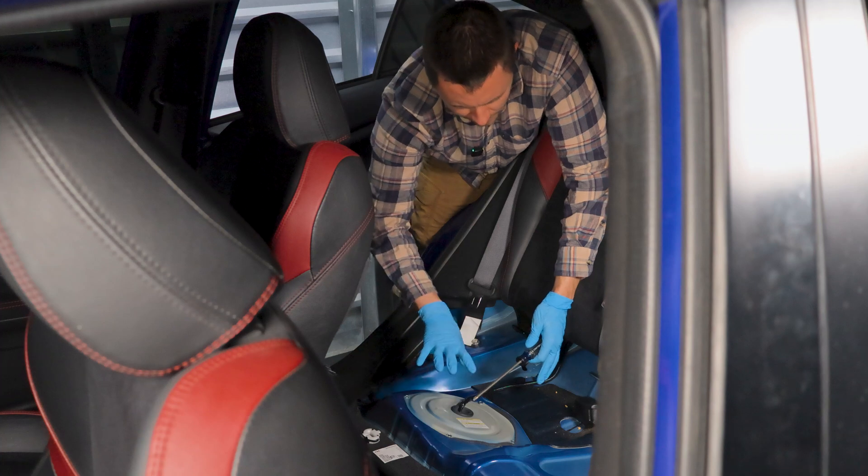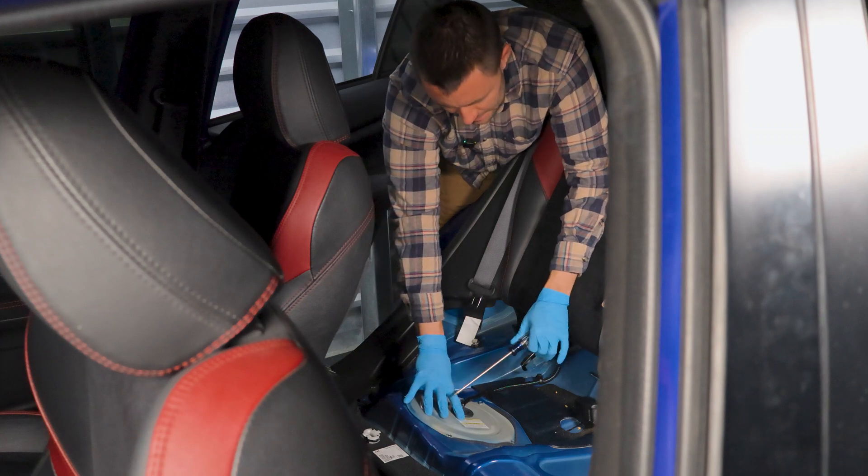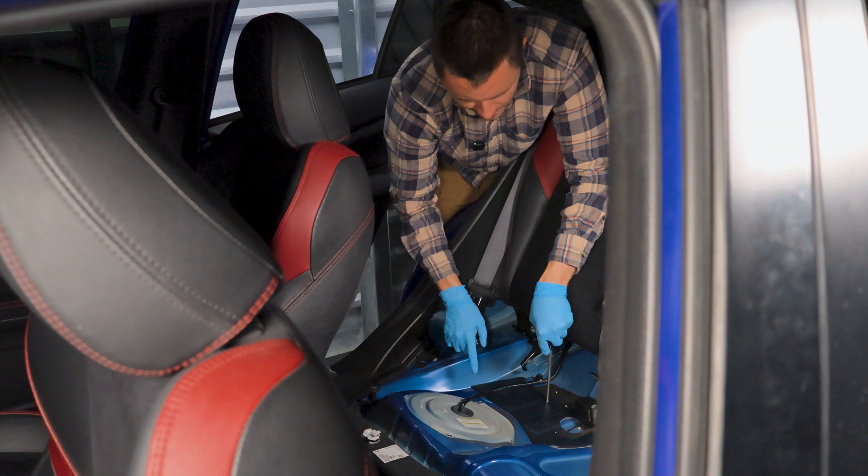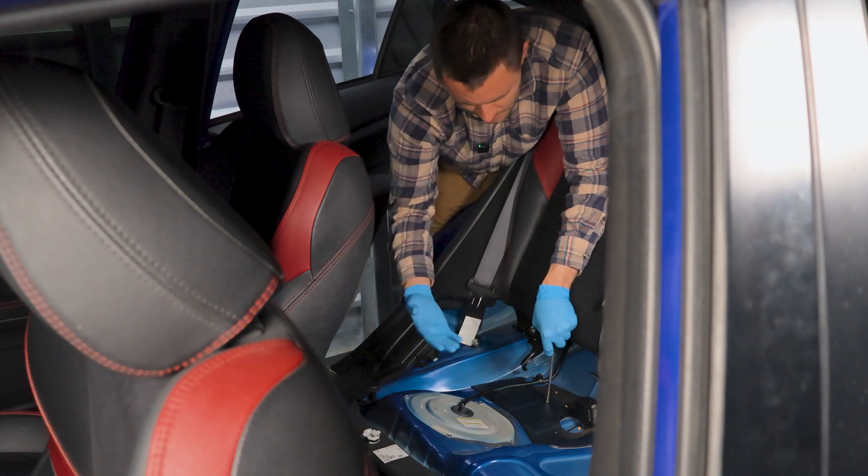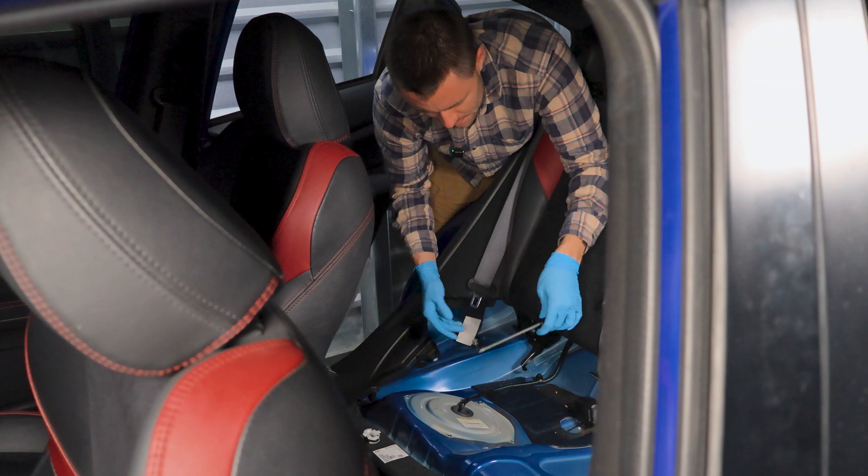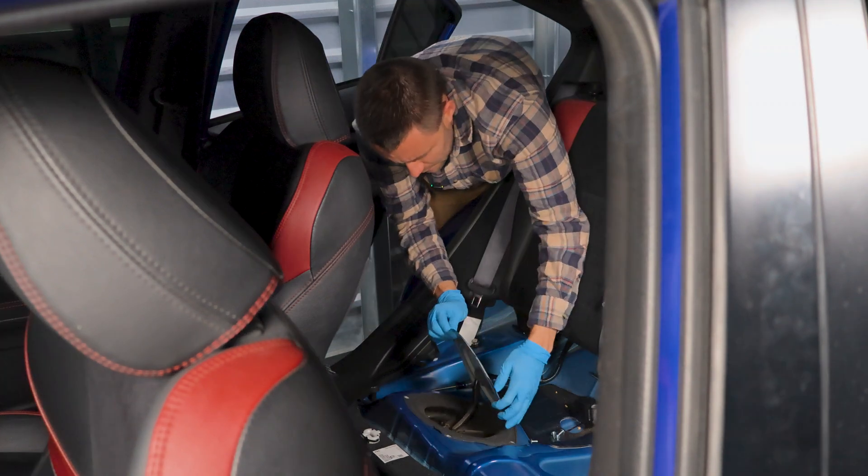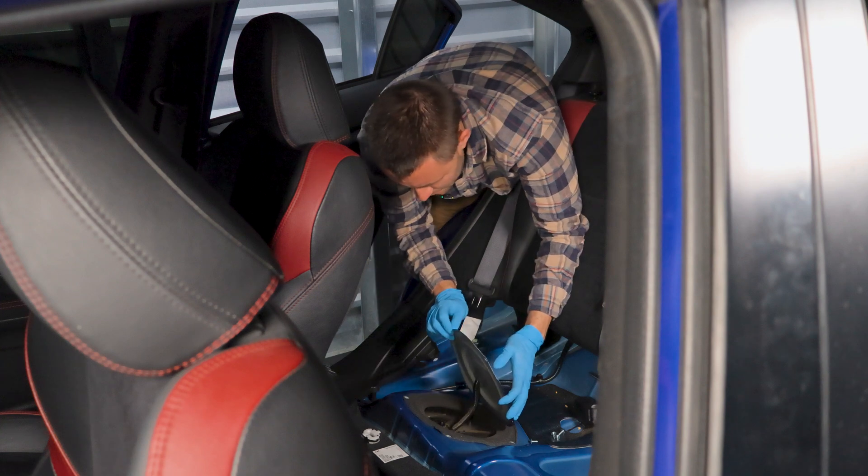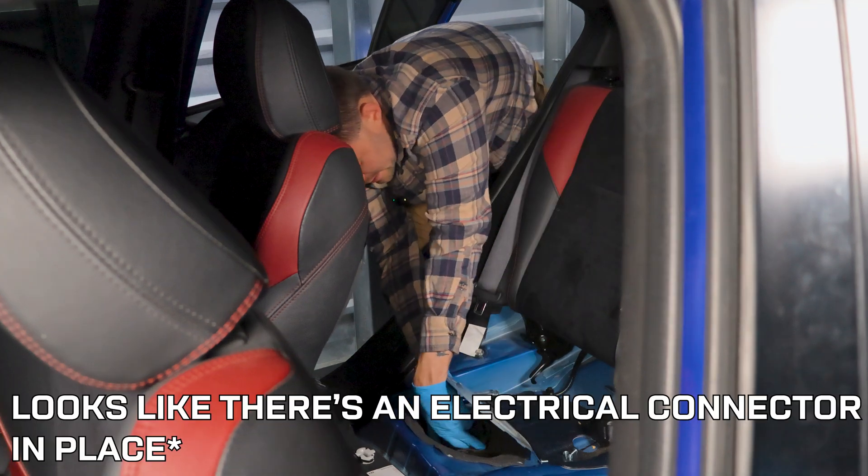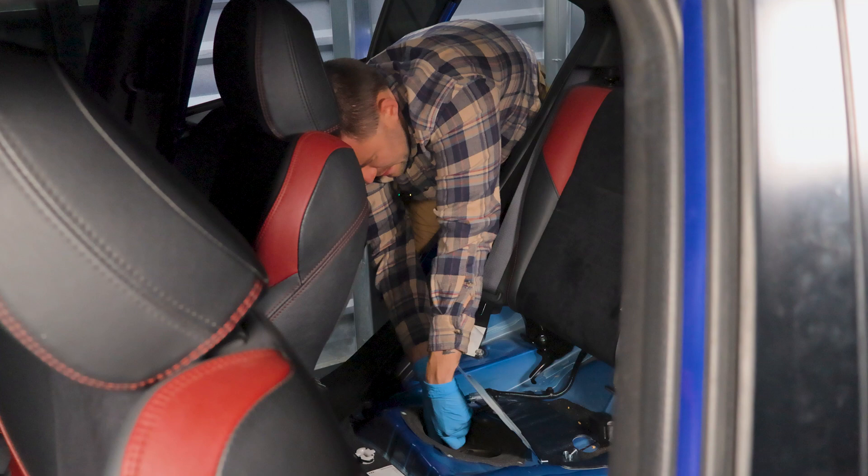Right underneath the passenger side back seat is the fuel tank. To access it, there's four Phillips head screws all around. We just need to get a screwdriver and take them out. Cover's off. Oh my gosh, so many spiderwebs in there. There's an electrical connector holding this in place. Let's disconnect that.